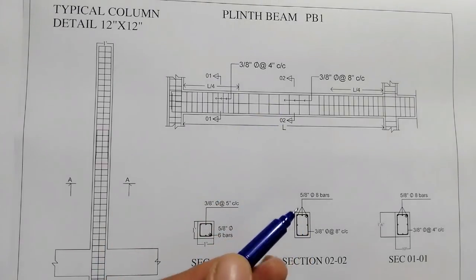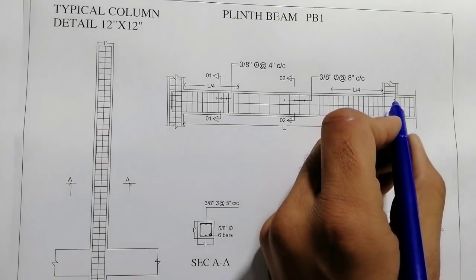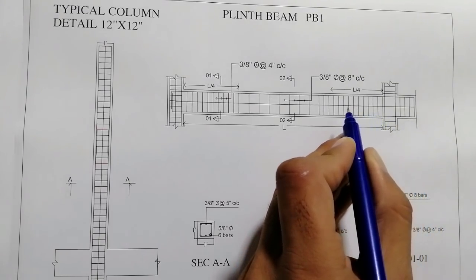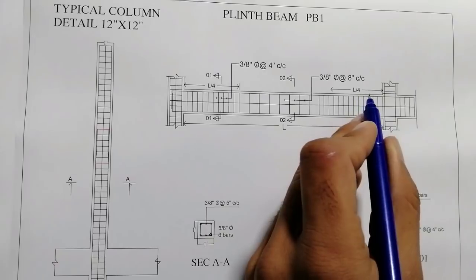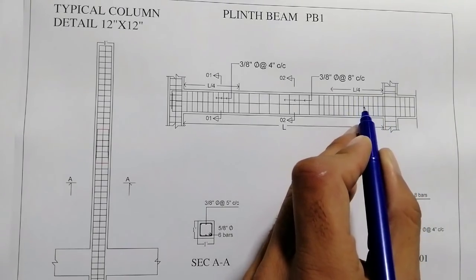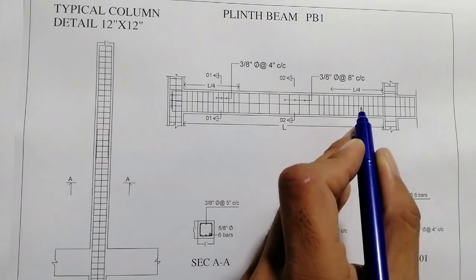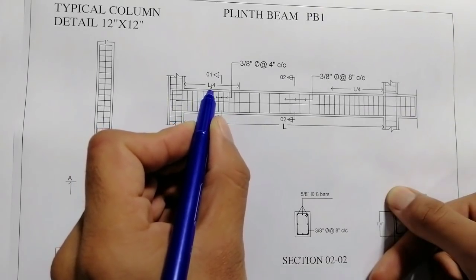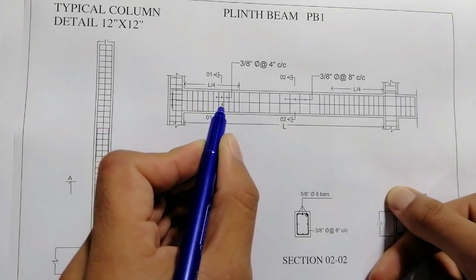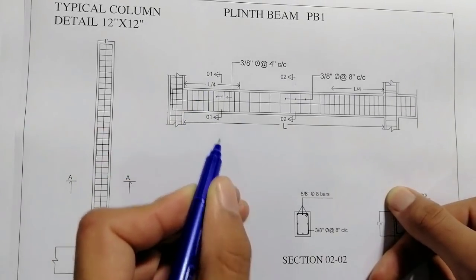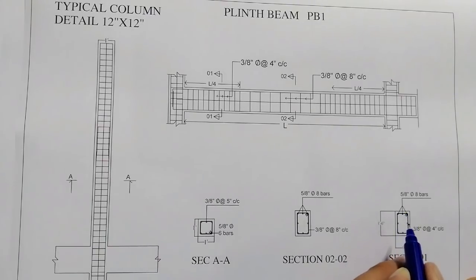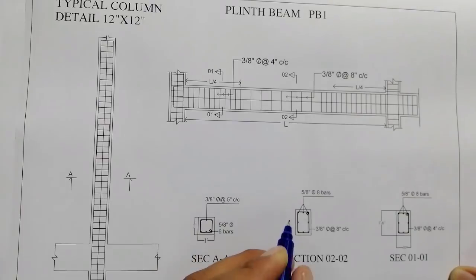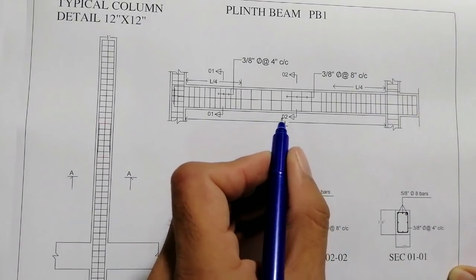Near the RCC column support, the stirrup spacing is closely placed with each other over a length of L by 4. The stirrup spacing is close because there are high shear stresses at the support, causing hogging. So stirrups should be closely spaced near the support. You can see L by 4 from this point — stirrups are close together. This is section 0101, which I will discuss. Here is section 0202, and I will discuss its stirrup detail as well.